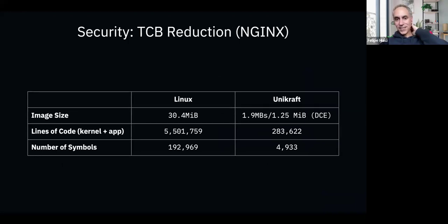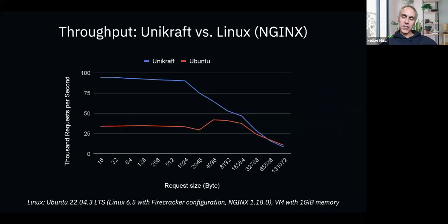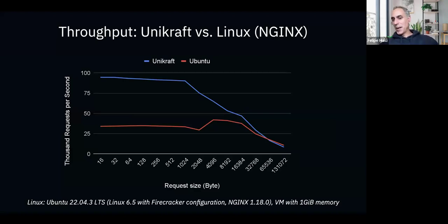Another benefit is that the TCB — the number of lines of code deployed per image — gets smaller, which means fewer attack vectors. Throughput is also improved because there are no actual syscalls crossing a user/kernel space divide, and the stack from application down to hardware is smaller, which helps I/O performance.